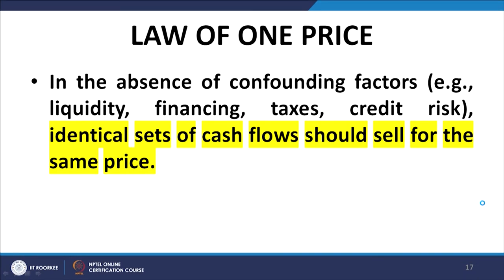Now we talk about arbitrage. Arbitrage as a principle is based on the law of one price. The law of one price states: in the absence of confounding factors like liquidity, financing, taxes, credit risk, etc., identical sets of cash flows should sell for the same price. Please note the word used is 'cash flows,' not profits. This is one of the most fundamental laws of finance. Wherever there is a violation of the law of one price, market dynamics will operate and bring equilibrium back to a situation where this law holds.